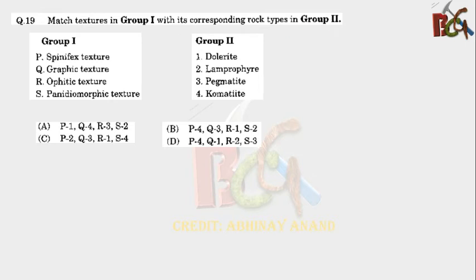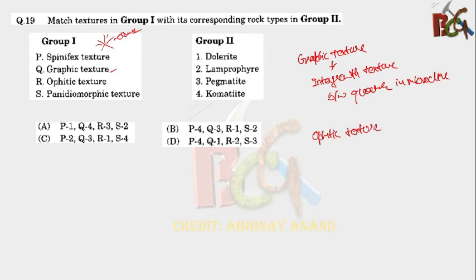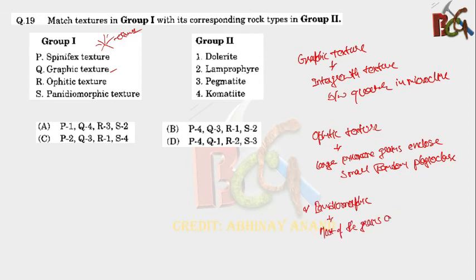This is the easiest question we have seen today. I am giving you 15 seconds. Can you tell me the answer? You can pause the video and solve it by yourself. So, spinifex texture. It is a typical texture of ultramafic rock, which is formed by the quenching effect. It will be formed like this. This is the dendritic growth of olivine crystal. Graphic texture is an intergrowth texture between the quartz and microcline.